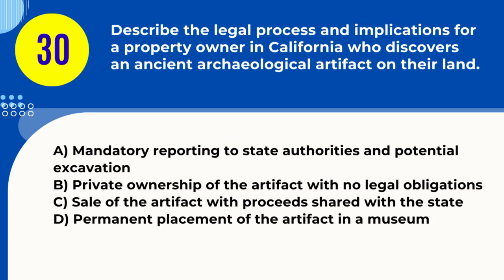Question 30. Describe the legal process and implications for a property owner in California who discovers an ancient archaeological artifact on their land. A. Mandatory reporting to state authorities and potential excavation B. Private ownership of the artifact with no legal obligations C. Sale of the artifact with proceeds shared with the state D. Permanent placement of the artifact in a museum. Answer: A. Mandatory reporting to state authorities and potential excavation. Explanation: Discovering an archaeological artifact in California requires reporting to state authorities, who may conduct an archaeological investigation.